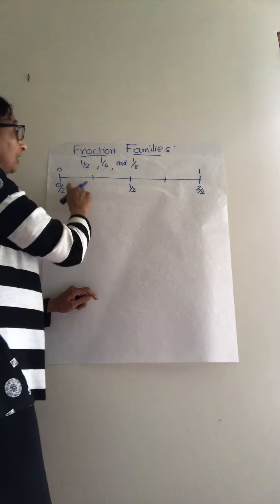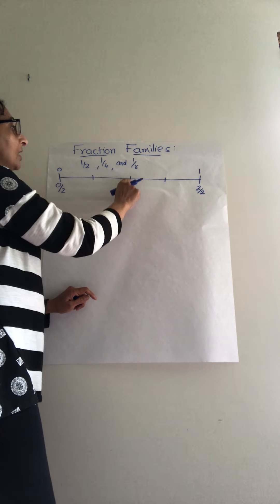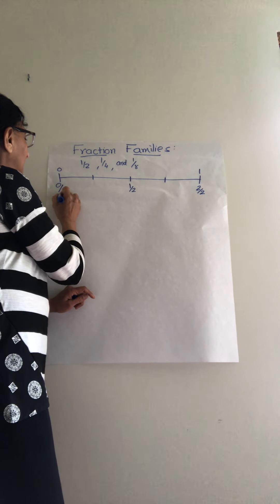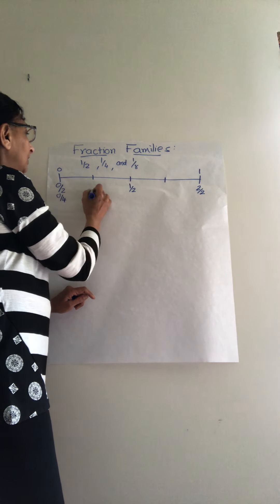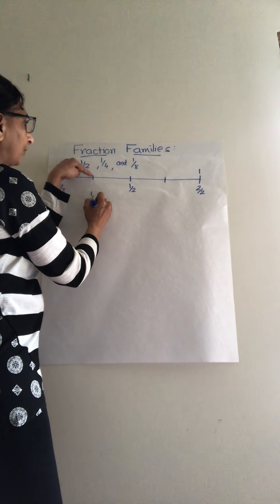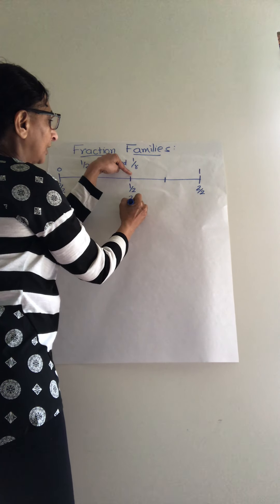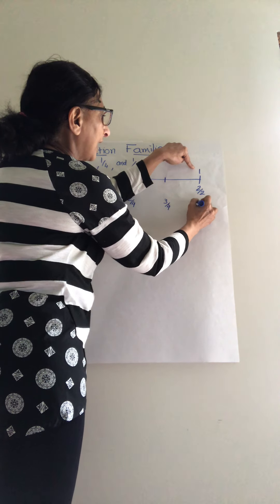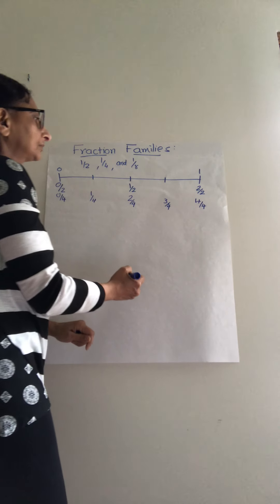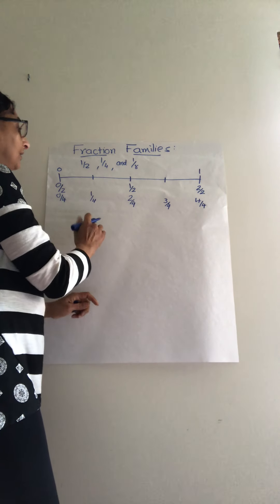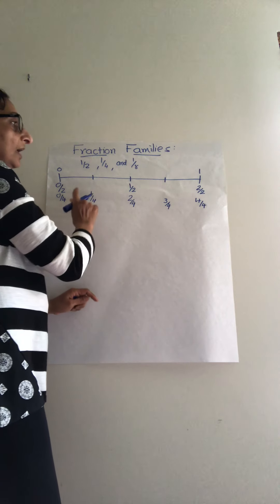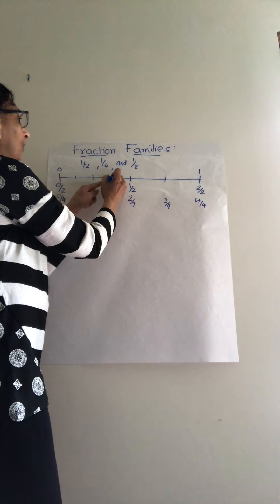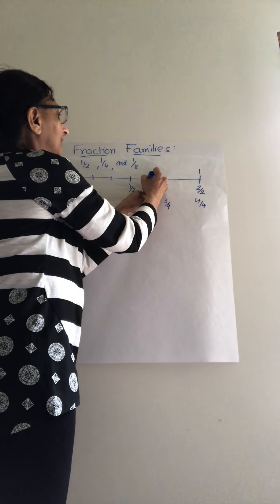Now cut each half into half again — one mark here and one mark here. Now you have one, two, three, and four equal parts. That gives us zero-fourth, one-fourth, two-fourth, three-fourth, and four-fourth.